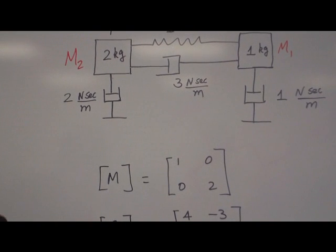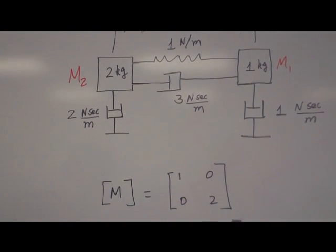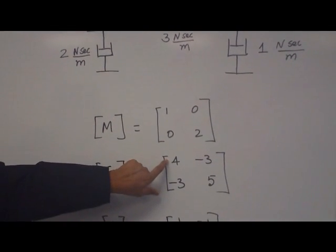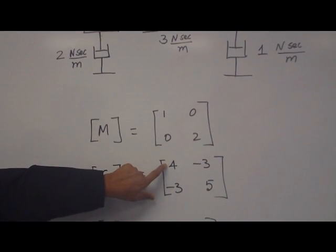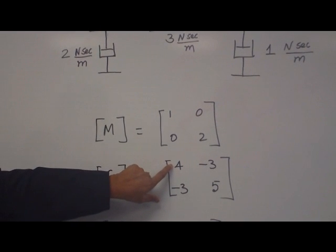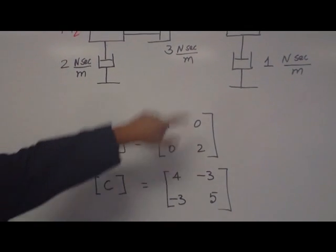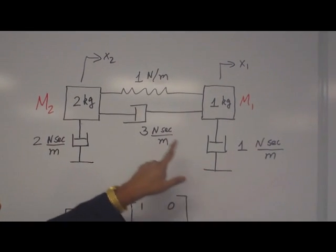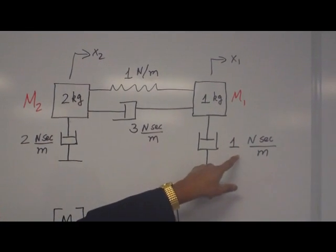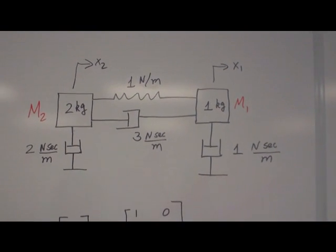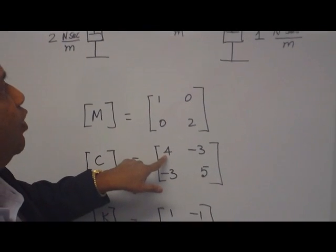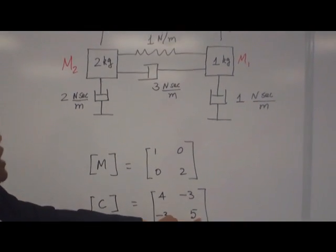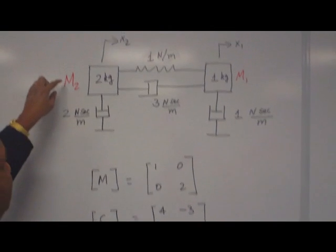Then the damping matrix, you can see the diagonal element. For example, C11 is nothing but sum of all the damping elements connected to mass 1. Take the mass 1. How many damping elements connected? This 1 and that 1. So it's 1 plus 3, 4 numerically. So that's right, number 4.